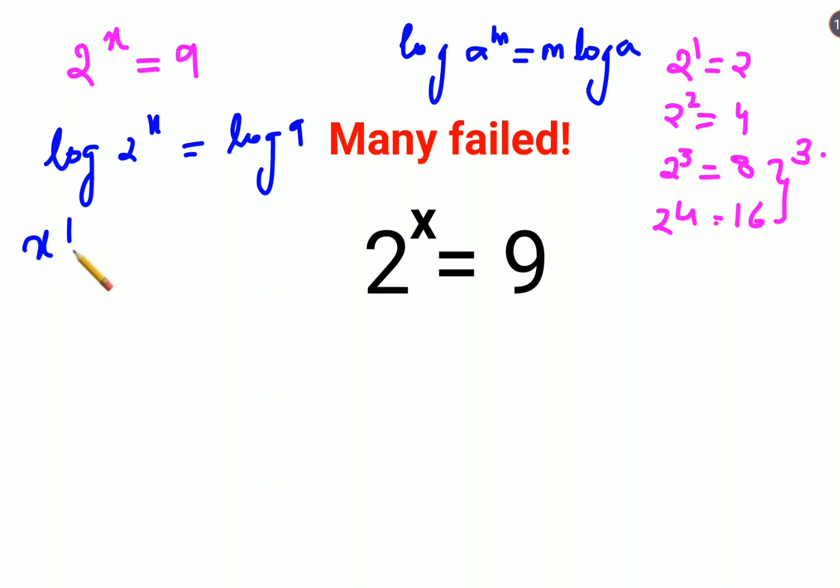this can be written as x log 2 equals log 9. Now in order to find the value of x, we will divide both sides by log 2. So this is canceling. The value of